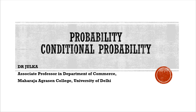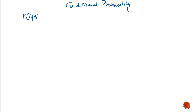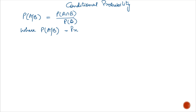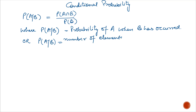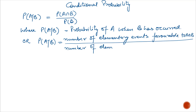Hi everyone, I am Arun Chulkar. Today in probability, we will talk about conditional probability. Probability of A given B equals probability of A intersection B divided by probability of B, where probability of A given B implies the probability of A when B has occurred. We can calculate probability of A given B using the formula: number of elementary events favorable to A intersection B divided by number of elementary events favorable to B.